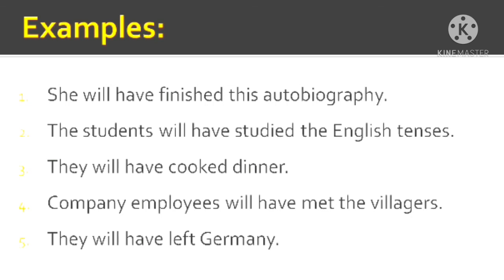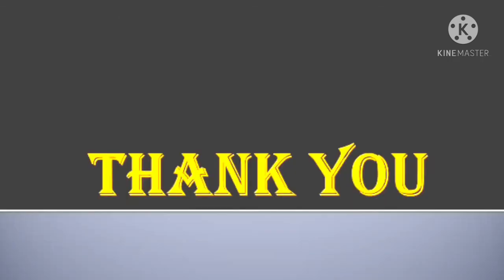The final sentence: 'They will have left Germany.' They are currently in Germany but are planning to return to their native country. By next week, they will have left Germany. 'They' is third person plural. 'Will have left' is the verb phrase — will as future tense indicator, have as perfective aspect, and 'left' is the V3 or past participle of 'leave' — L-E-A-V-E, leave, left, left. This concludes the discussion of all three types of perfect tense.